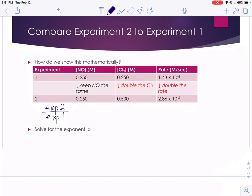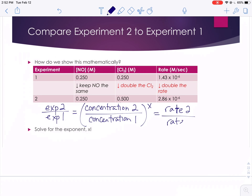When we compare experiment 2 to experiment 1, we're going to take the concentration of our chlorine in trial number 2, divide it by the concentration of our chlorine in trial 1, and we're going to raise that to x, our order, our exponent that we're trying to solve for. That's going to be equal to the rate for experiment 2 divided by the rate for experiment 1.